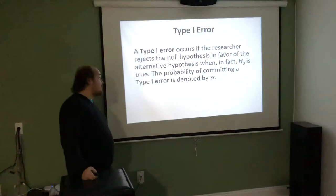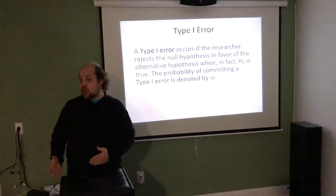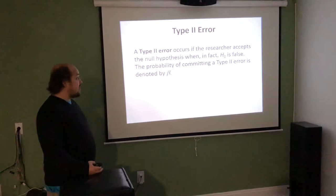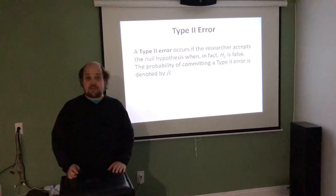Type 1 error occurs when a researcher rejects a null hypothesis in favor of the alternative when in reality the null was true. The probability of committing a Type 1 error is alpha. A Type 2 error is the opposite — we fail to reject the null, saying there isn't enough evidence that the null is false, but in reality the null was false and we should have been able to reject it.